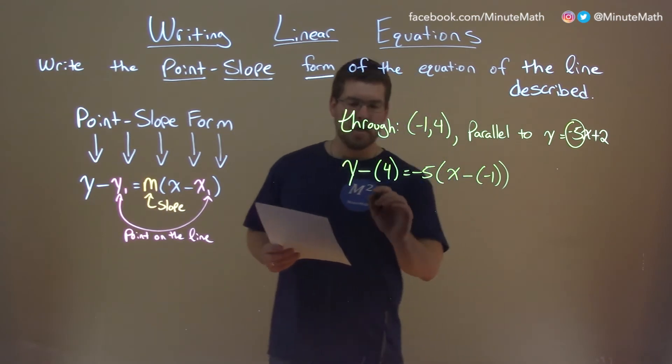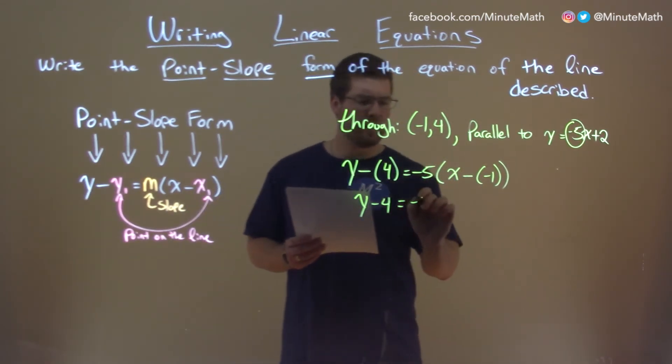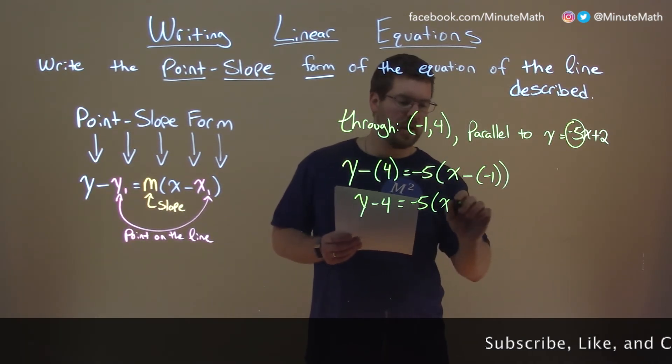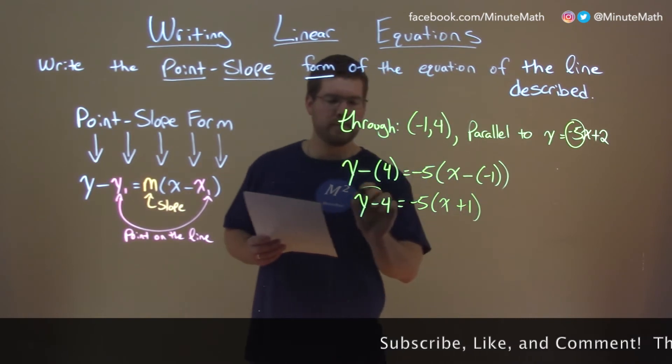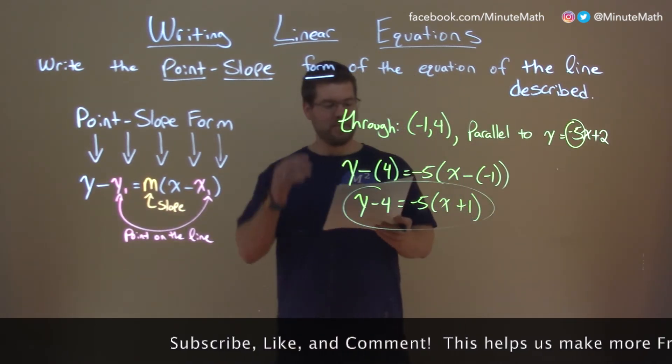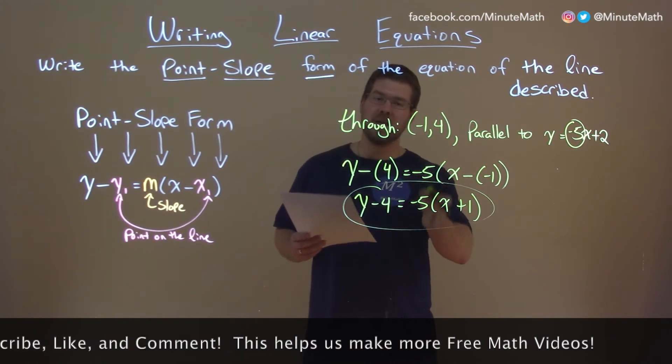But let's simplify. We have y minus 4 here, don't need to write those parentheses anymore. Negative 5 here times x minus a negative 1 is like plus a positive 1. So we have plus 1 here, and there we have it. We have our slope point slope form here of y minus 4 equals negative 5 times x plus 1, as our answer in point slope form.